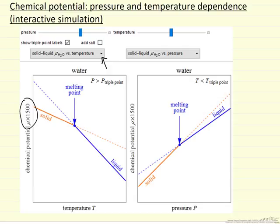The simulation also allows us to show whether the conditions we're looking at are above or below the triple point. For example, if we look at solid-liquid equilibrium, this says the temperature is below the triple point temperature.